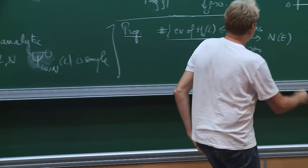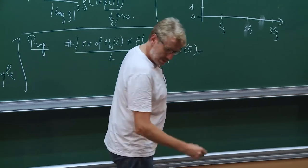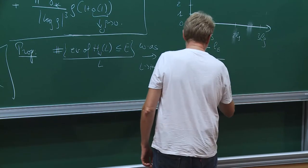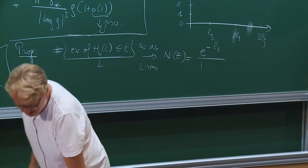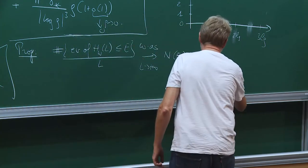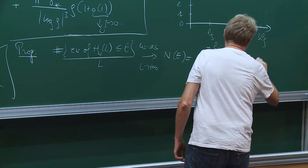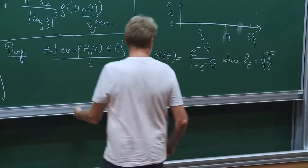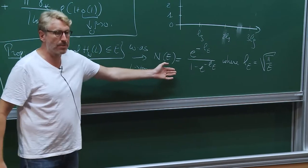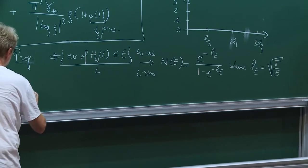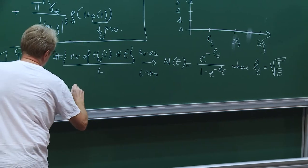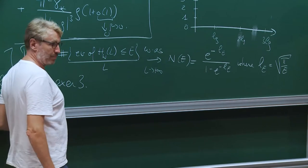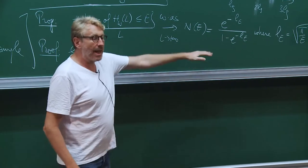This density of states is equal to exactly e to the minus L(E) divided by 1 minus e to the minus L(E), where L(E) is the square root of pi over E. So in this case you can actually compute this explicitly. That's exercise 3: compute this explicitly. You get a nice closed formula.